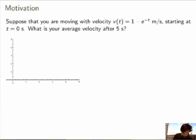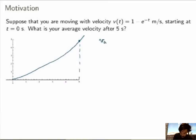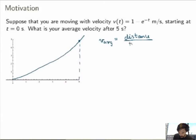The velocity function, if you sketch the graph, will look like something like this. Now t equals 5 is here. I could certainly calculate the instantaneous velocity at t equals 5 just by substituting t equals 5 in my expression, but what I want is the average velocity between t equals 0 and t equals 5. The average velocity will be given by the distance covered over these 5 seconds divided by the time interval, which will be just 5 seconds in this case.